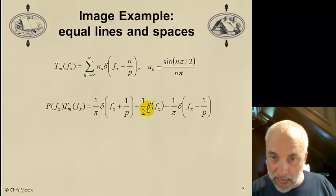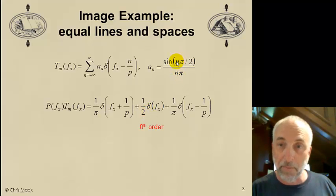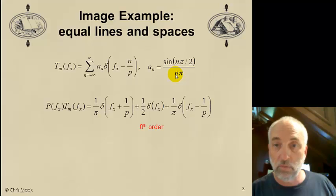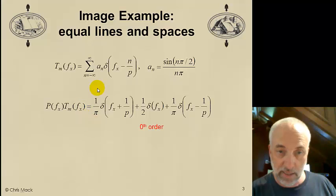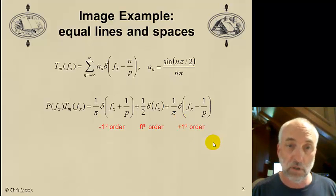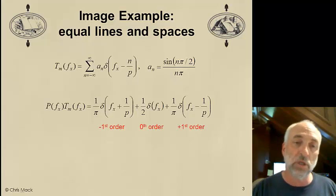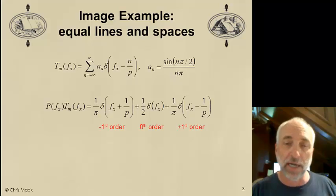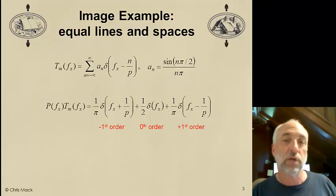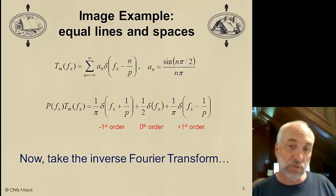But, instead of having an infinite number of diffraction orders, I only have 3, the 0 plus and minus 1. So, if I write out those terms explicitly, I put in N equal to 0 here, I get A sub 0 is simply 1 half. There's my 0th order. I put in N equal to minus 1, sine of minus pi over 2 is minus 1. Put in minus 1 here, I simply get 1 over pi. So, that's my minus first order. Plug in N equal to plus 1 here, I get, again, 1 over pi. And so, here's my plus first order. And that's it.